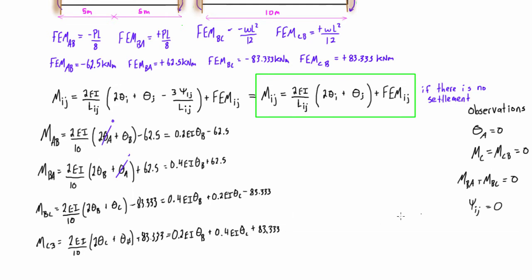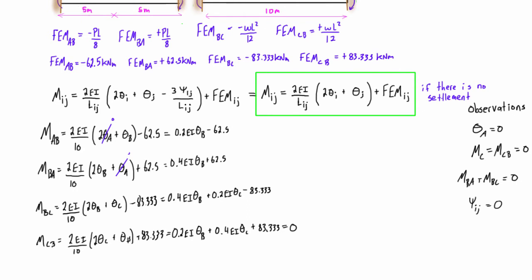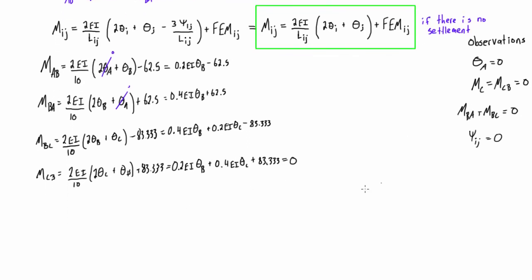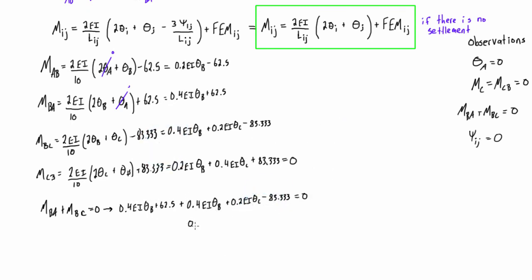We know M-CB equals zero since it's a pin/roller end, so we can set that expression equal to zero. We also have the compatibility equation from the previous video: M-BA plus M-BC equals zero. Substituting those expressions and combining like terms gives us one equation: 0.8 EI theta-B plus 0.2 EI theta-C equals 20.8333.